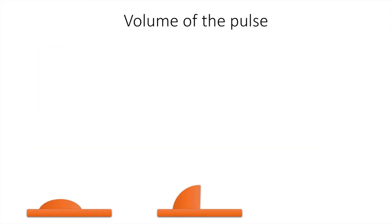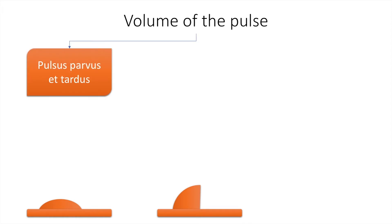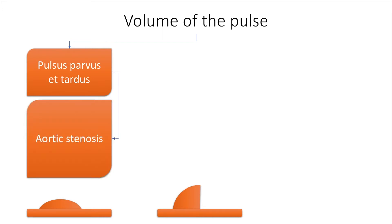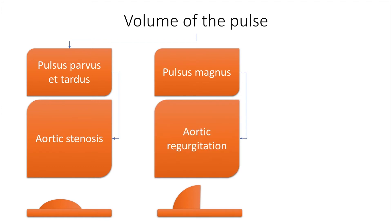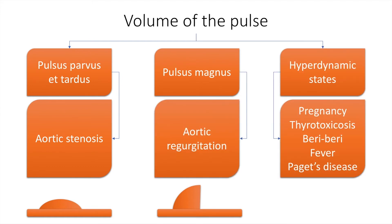Let us now take a look at the volume of the pulse. This can be pulsus parvus et tardus, which simply means a delayed systolic peaking in a slow rising pulse, and this is caused because of aortic stenosis. There can be pulsus magnus, which is caused because of aortic regurgitation, or there can be hyperdynamic states such as pregnancy, thyrotoxicosis, beriberi, fever, or Paget's disease, which can cause a high volume pulse.